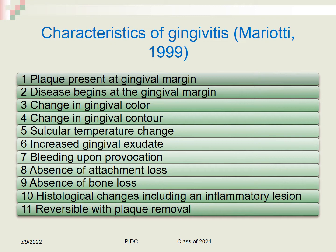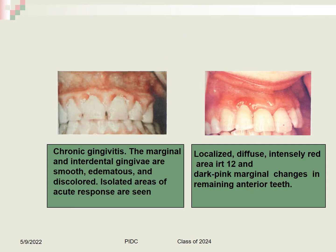The major characteristics of gingivitis include plaque present at the gingival margin, disease starting at the gingival margin, changes in color, contour, and temperature, increased gingival exudate, bleeding upon provocation, absence of attachment loss, absence of bone loss, histological changes of inflammatory lesion, and reversibility with plaque control. Chronic gingivitis appears with smooth, edematous, discolored marginal and interdental gingiva.